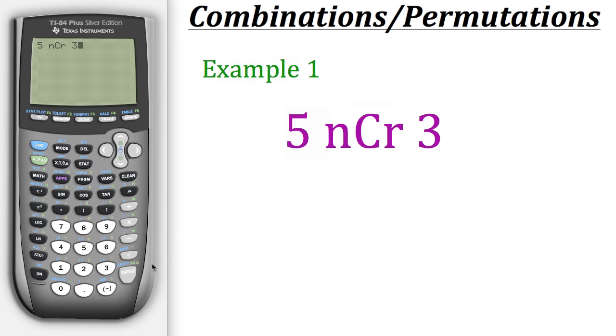Now when we hit enter the calculator will give us the total number of combinations we could have by choosing three items out of a total of five without repetition which in this case is ten.